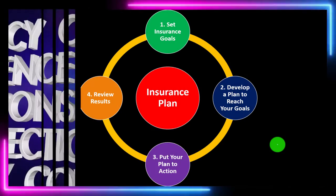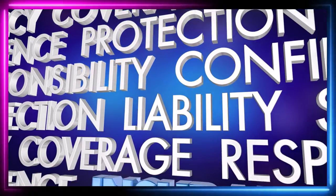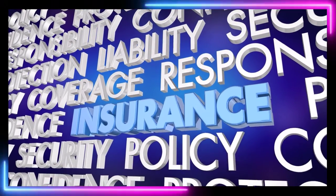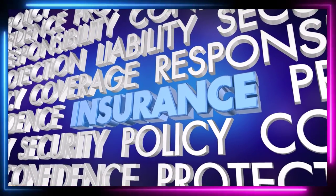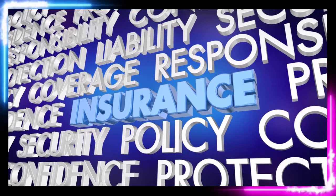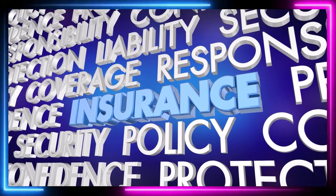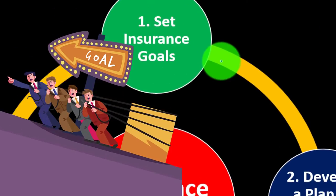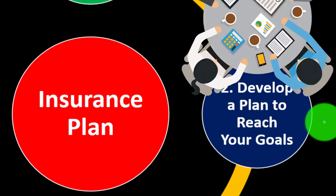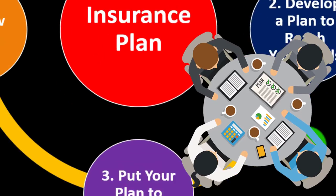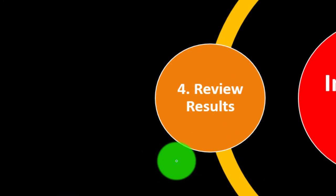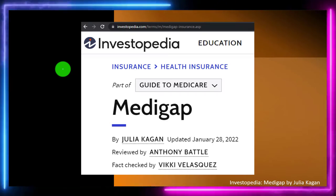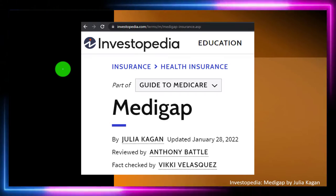Insurance is part of our long-term risk mitigation strategy where we follow the adage of measure twice, cut once. Put a formal process in place: look at setting the goals, develop a plan to reach them, put the plan in action, review the results, and repeat the process periodically.